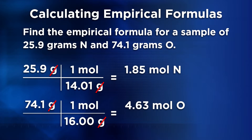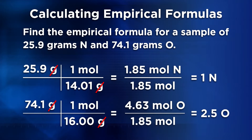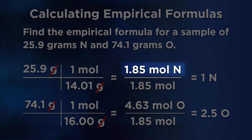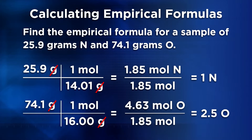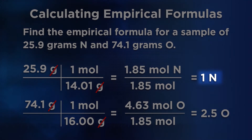After converting to moles of each element in the compound, we're on to the next step: divide by the smallest molar amount, or from the rhyme, divide by smallest. In this problem, 1.85 moles is smaller than 4.63 moles. So we divide 1.85 into both 1.85 and 4.63. We get 1 for nitrogen and 2.5 for oxygen. But 2.5 is not a whole number, so that is not an acceptable empirical formula.